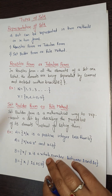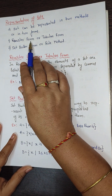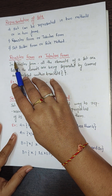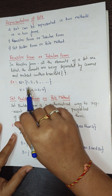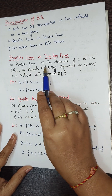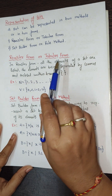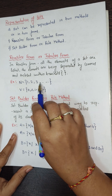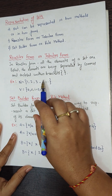Next is representation of sets. We can represent sets in two methods. The first method is roster form, also called tabular form. In roster form, all the elements of the set are listed directly inside curly brackets, separated by commas. It is compulsory to enclose the elements within the brackets.